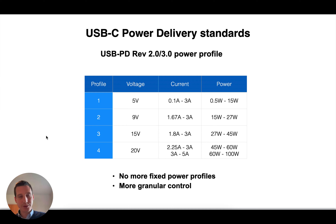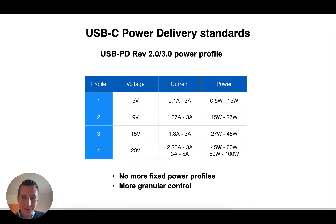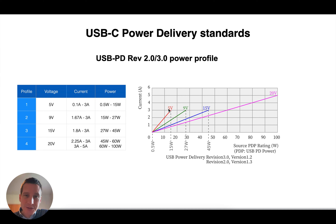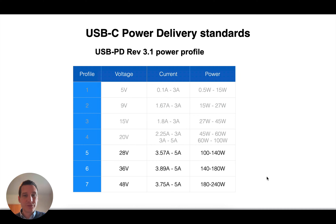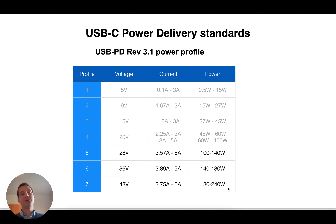That's the 1.0 profile. There's also 2.0, 3.0, and 3.1. The basic thing is that the voltages have changed a bit and there are no fixed profiles anymore — the current and output power vary. At the lower voltage level you can go up to 15 watts, then 9 volts takes over up to 27 watts, from 27 watts onwards it's on 15 volts, and from 35 watts onwards it's 20 volts all the way up to 100 watts. There's more granular control compared to version 1. The 3.1 profile adds even higher voltages and current up to 5 amps — maximum today is 48 volts at 5 amps, so 240 watts.